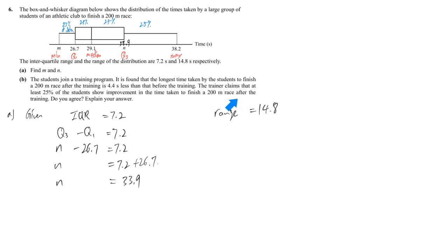Similar reason, when we talk about range, by definition we talk about maximum minus minimum. In this case maximum 38.2 while minimum is m unknown. We are going to solve this equation. M is 23.4.